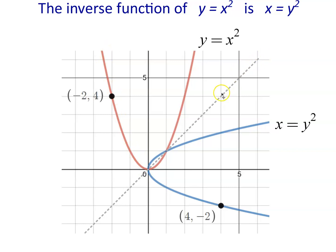And the reflection of that becomes that. So in general, with inverse functions, you just reflect the graph across the line y equals x, and you'll get the graph of the inverse function.